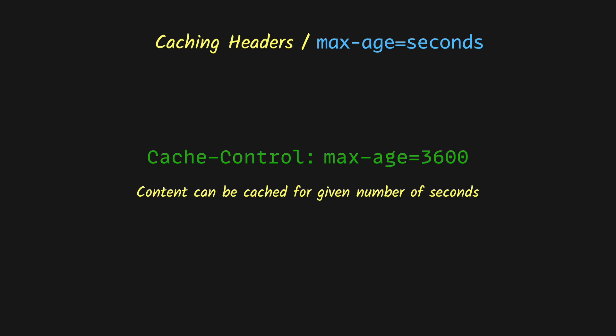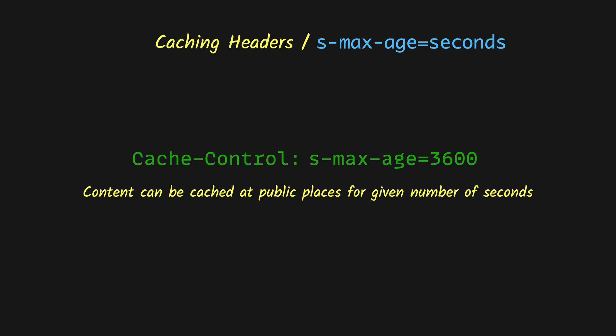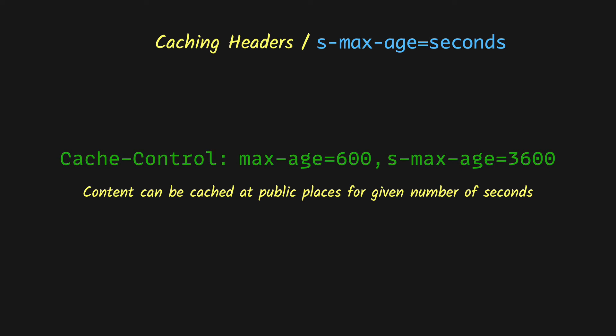Then we have max-age, which tells the client that the content can be cached for the given number of seconds. For example, a value of public, max-age=3600 means the content can be cached at any public places or proxies for 3600 seconds or 60 minutes, while private, max-age=3600 means the content can only be cached at the client for 60 minutes. We also have s-maxage — the prefix s stands for shared — which is the same as max-age but gives the caching duration for shared places or proxies. When both max-age and s-maxage are present, max-age applies to client-side caching and s-maxage applies to shared caching.